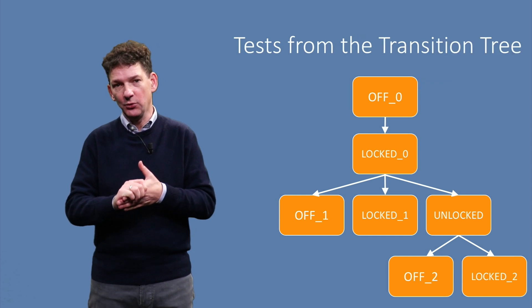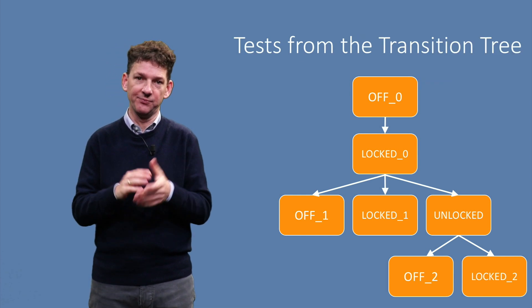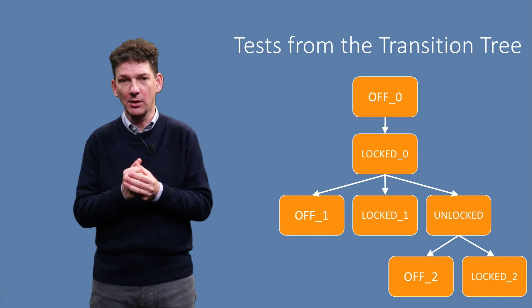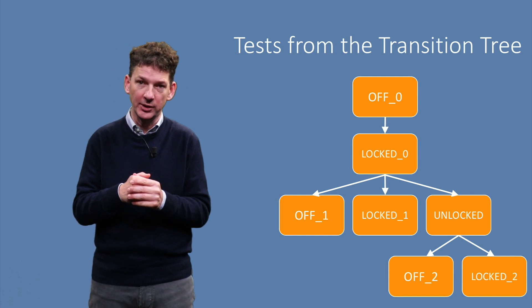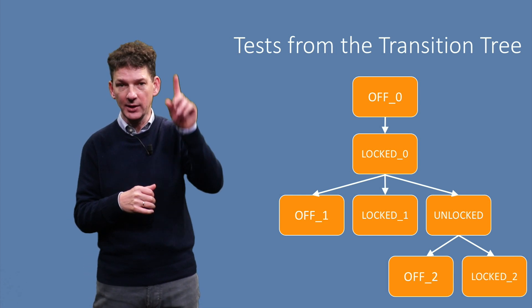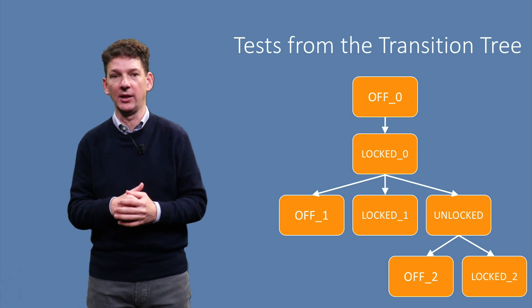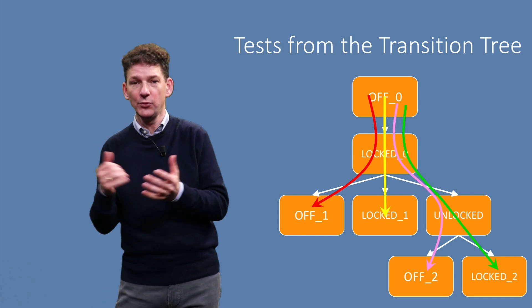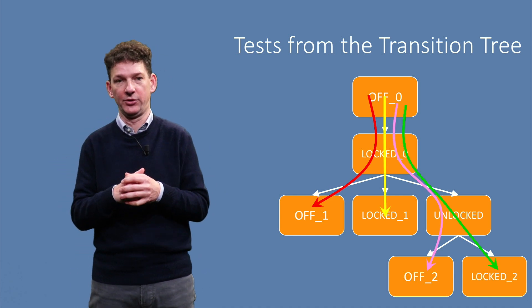Once we have the tree, we can use it to derive test cases. Each test case then is a path from the root of the tree to one of the leaves. With four leaves for this tree, we then arrive at four different test cases. Here we show the four test cases with different colors.